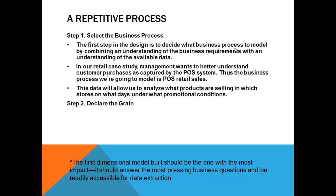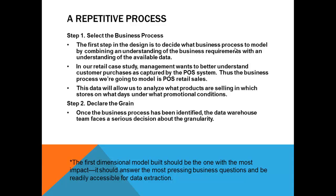Business is going to be very unhappy about it. So be very careful while you declare a grain. Once the business process has been identified, the data warehouse team faces a serious decision about the granularity. That is very important. What level of data detail should be made available in the dimensional model? You will have to define the grain — at individual transaction level, invoice level, or by the day level. That is the second step.